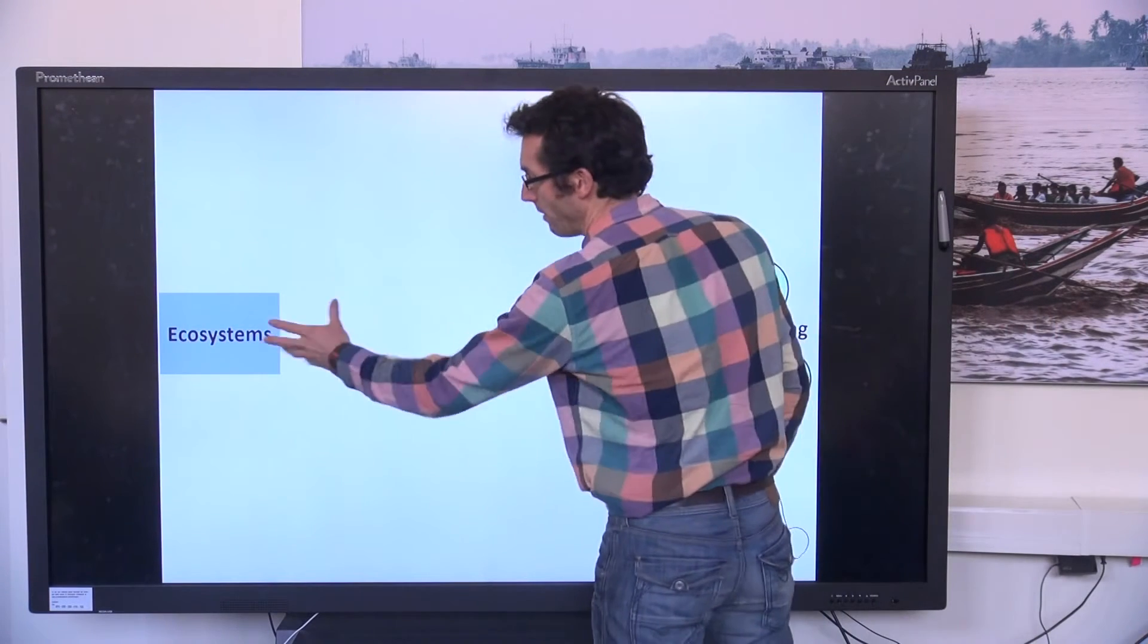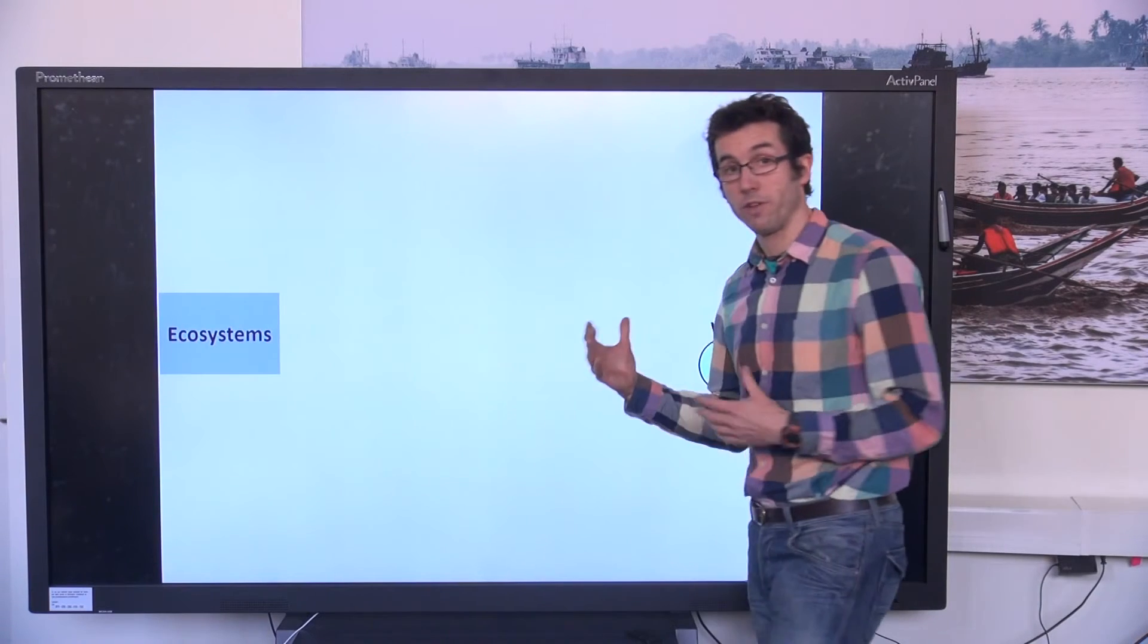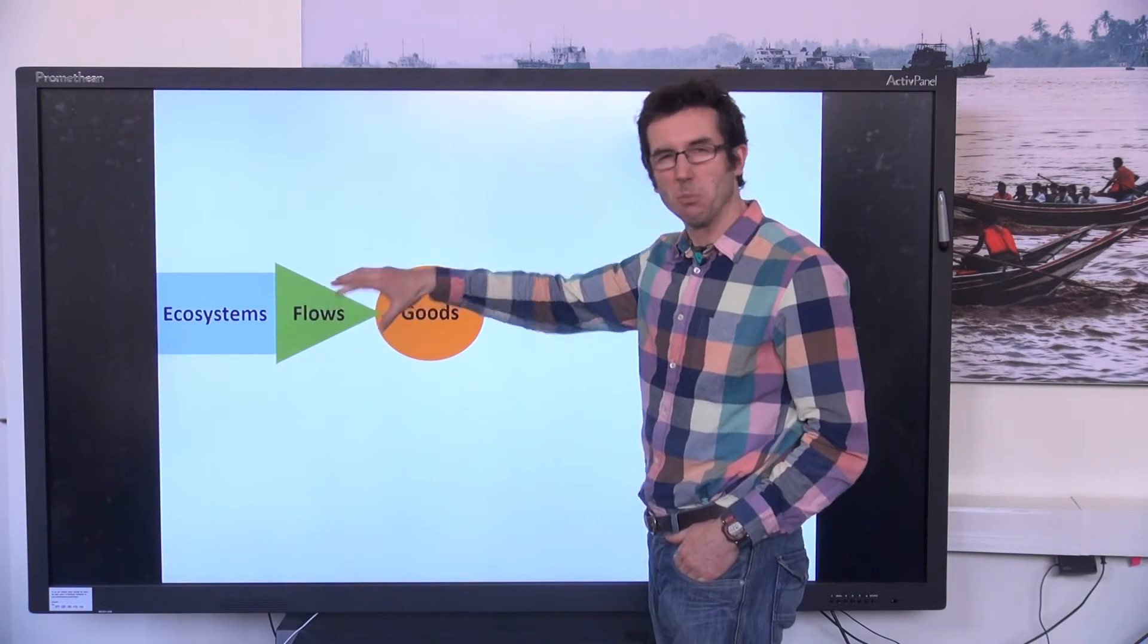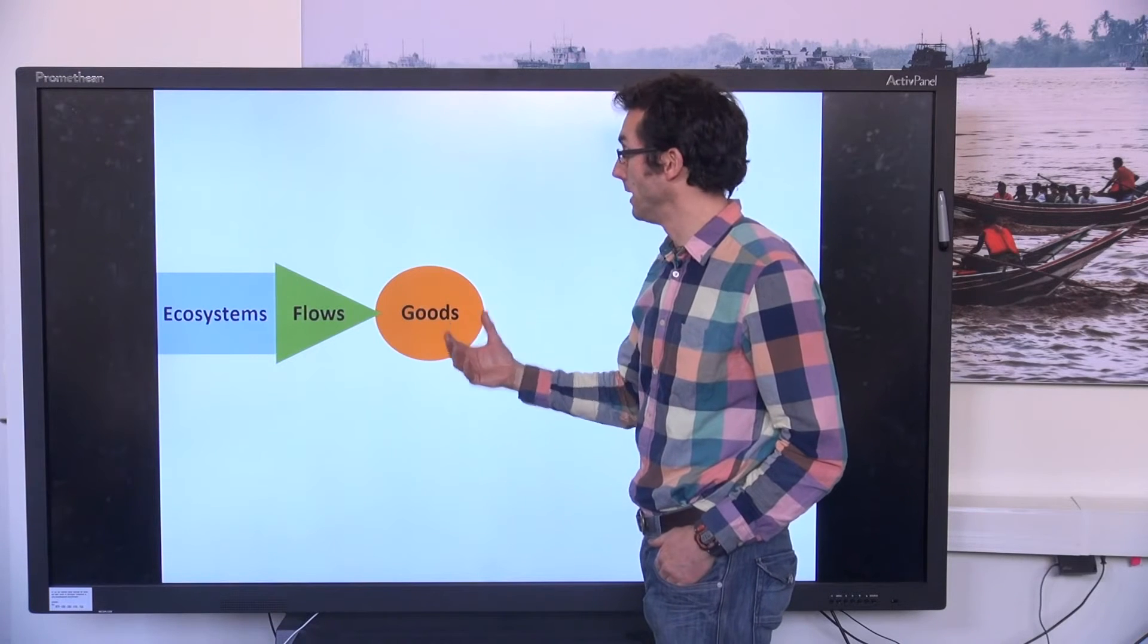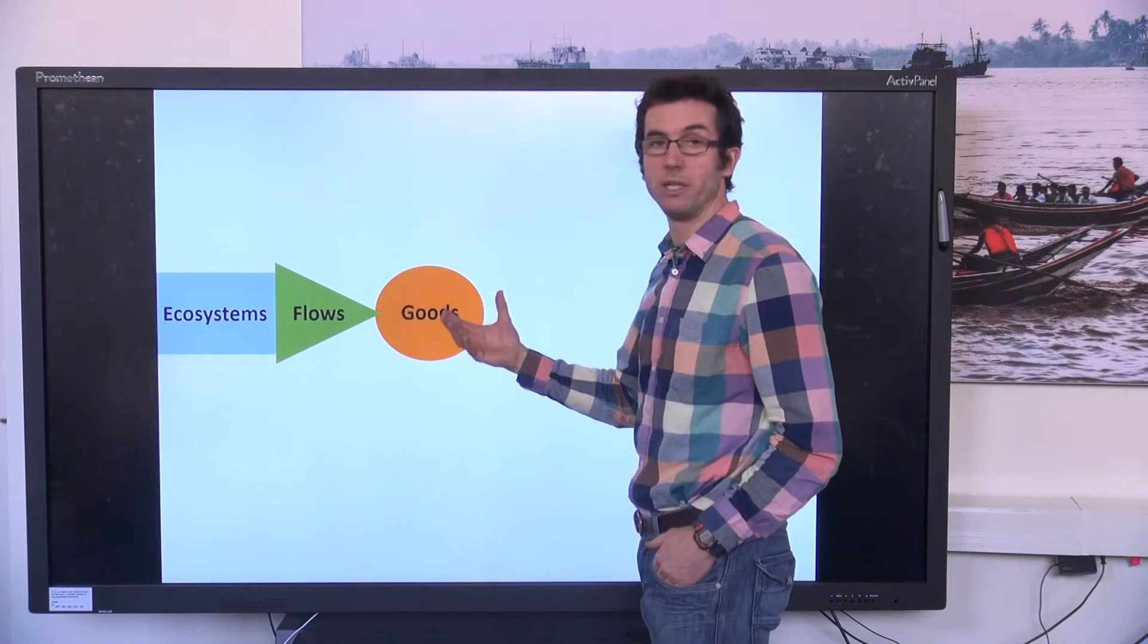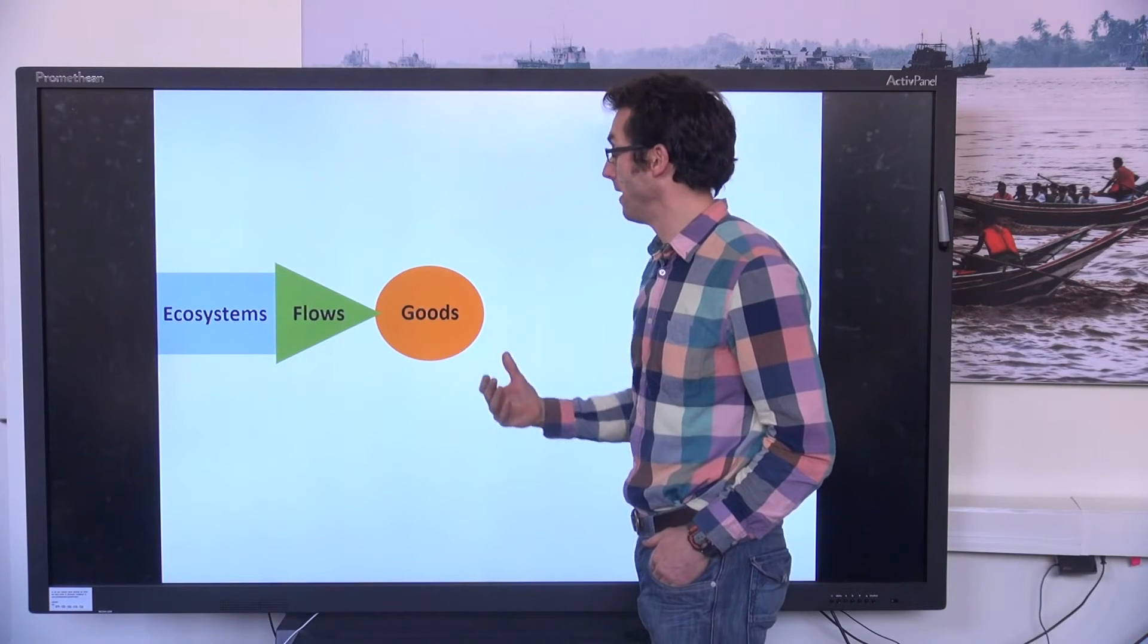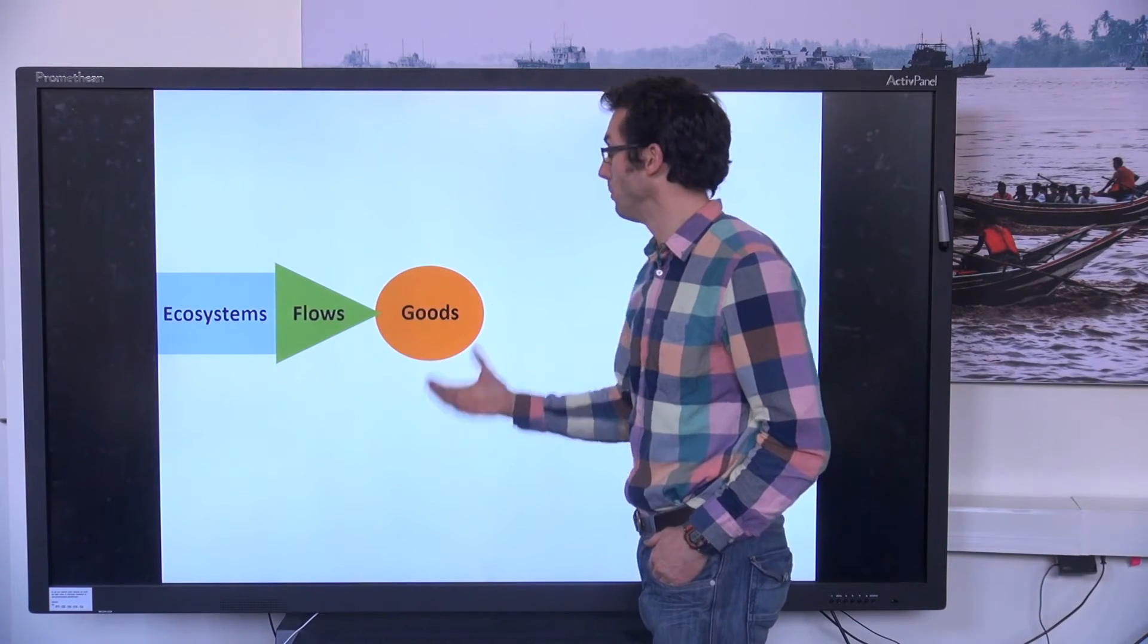So we have ecosystems out there, but in order for them to enhance well-being, they need to have particular properties which are potentially useful for human beings, and then we need human inputs where people need to actually go and enjoy or to harvest or be protected by those flows, and we call that goods.